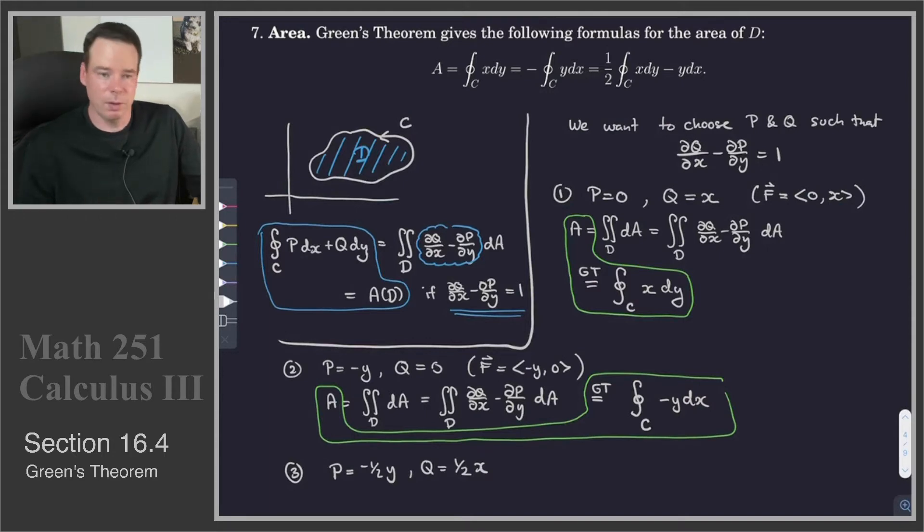And therefore, the area can be computed by the line integral. Let's see that this is the case here. So in this case, F would be (-1/2 y, 1/2 x).